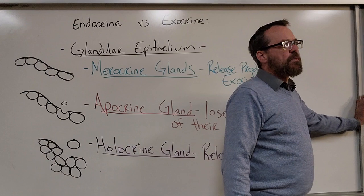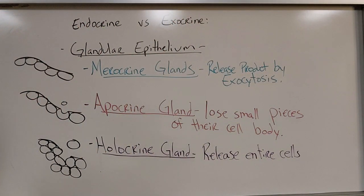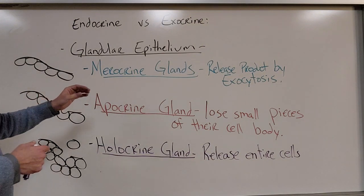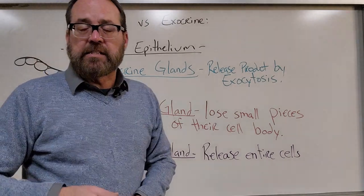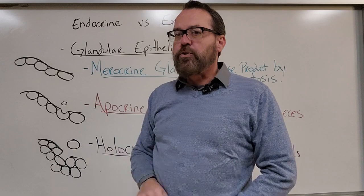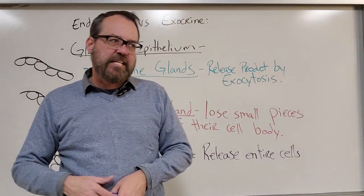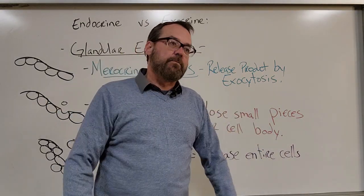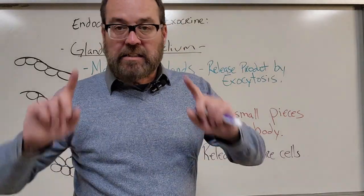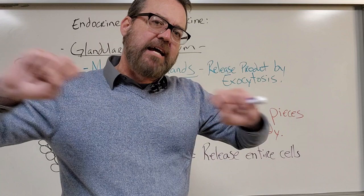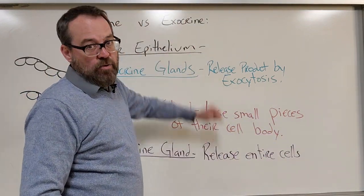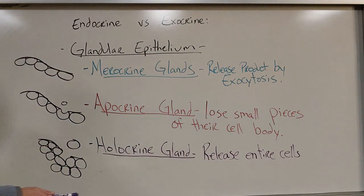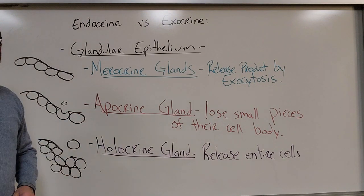The last thing for epithelial tissues is the distinction between endocrine and exocrine. Endocrine means internal secretion — typically hormones — secreted right into our bloodstream, staying in our system. With exocrine glands, we secrete stuff to the outside world — sweat glands, mammary glands, earwax glands. Anything that goes to the outside world is classified as exocrine. We have a couple of ways to look at glandular epithelium, specifically around how they secrete their product.